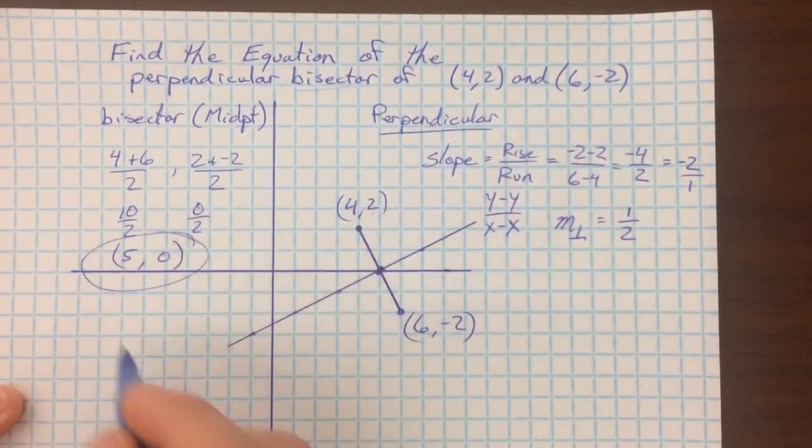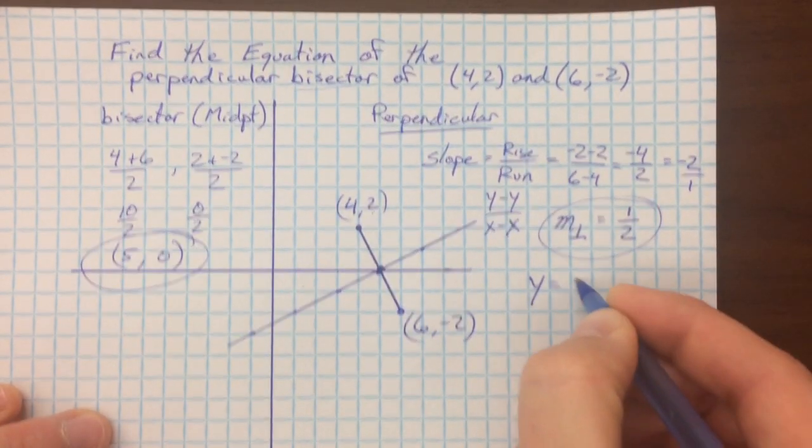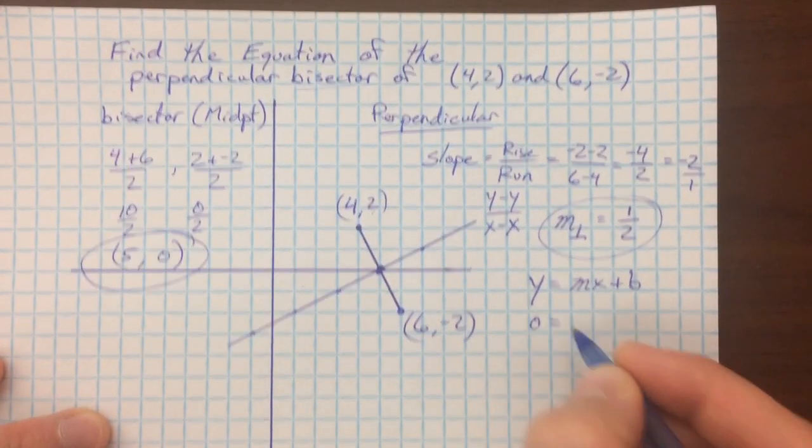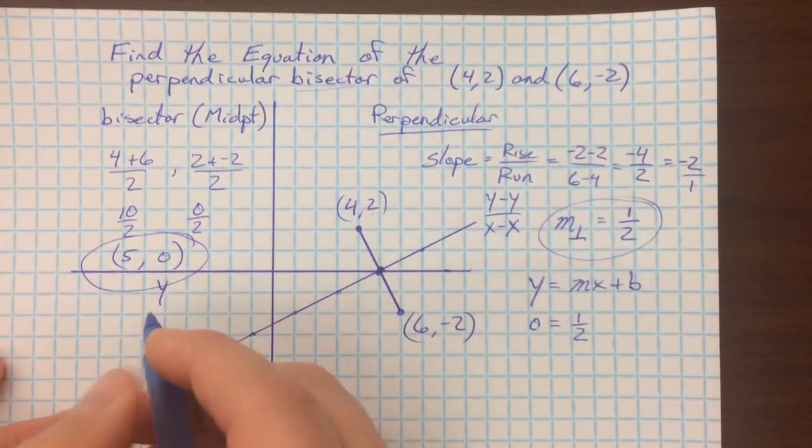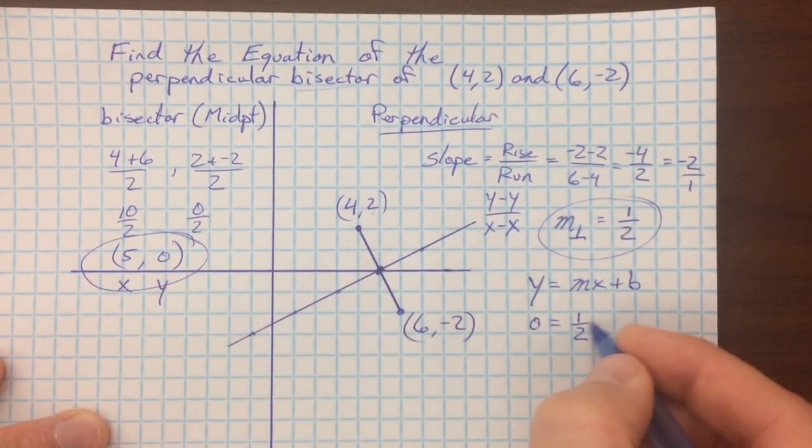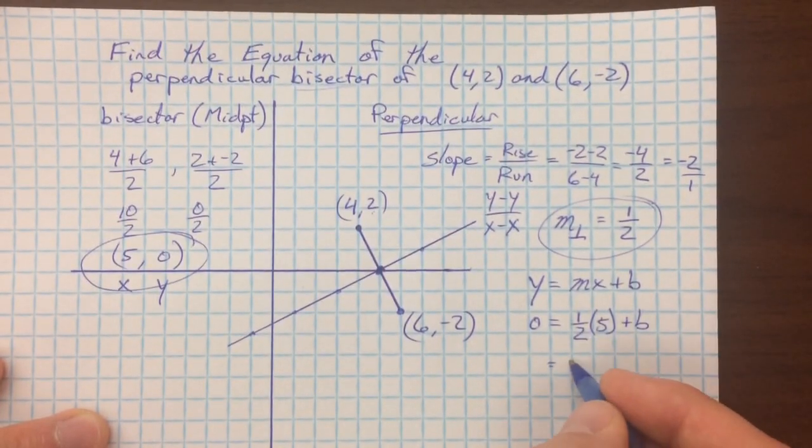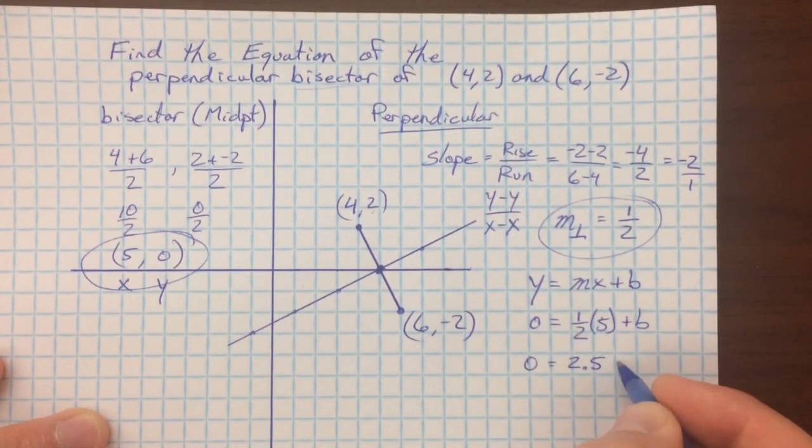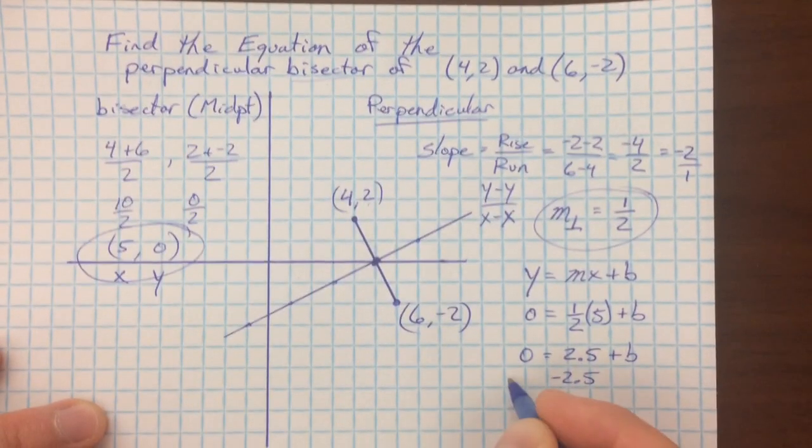I'm going to use this point that I want it to go through, (5,0), and I'm going to use this slope that I want. I'm going to write y equals mx plus b. I can write 0 equals, using the 0 from my point as my y, using the slope 1 half, and using the x value 5. I'm just going to do 2 and a half, so 0 equals 2.5 plus some amount.